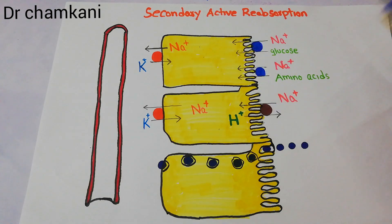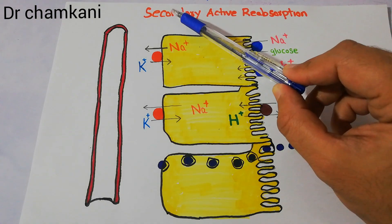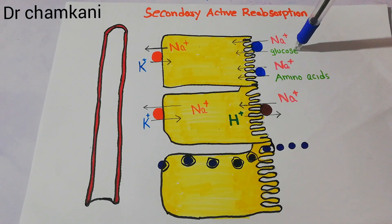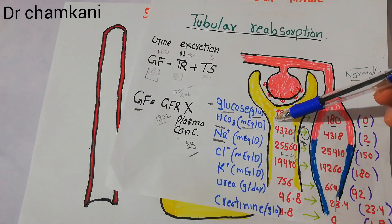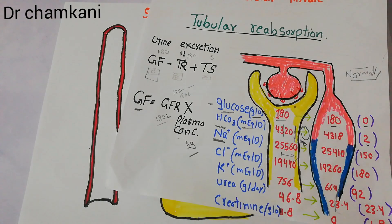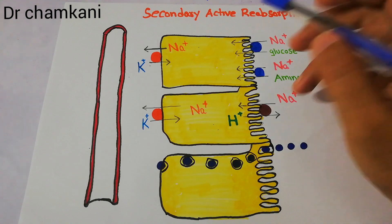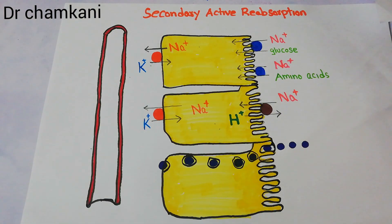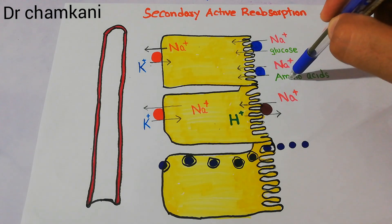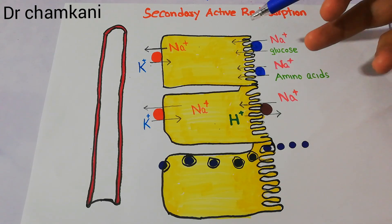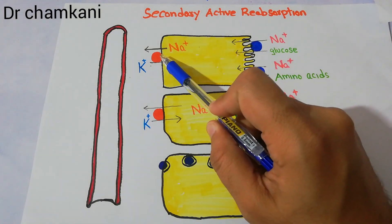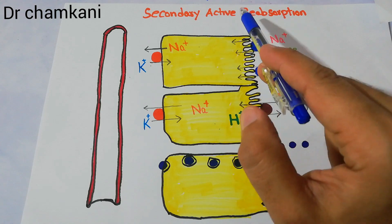Why do we call it secondary active? It is active because the reabsorption of glucose and amino acids from the proximal tubule into the blood requires energy — so it is an active process. However, the energy is not generated by the glucose or amino acids themselves; rather, this energy comes from the movement of sodium. It is therefore secondary to the movement of sodium, which is primarily driven by the sodium-potassium pump. That is why it is called secondary active reabsorption.